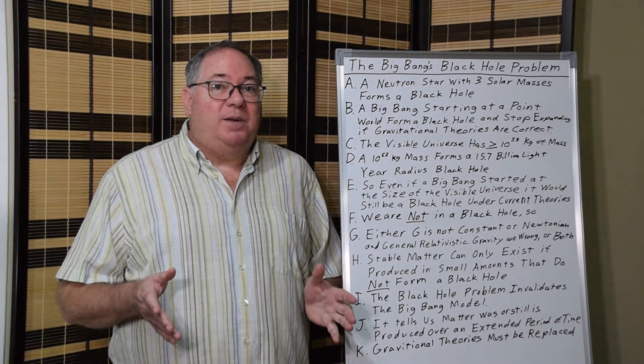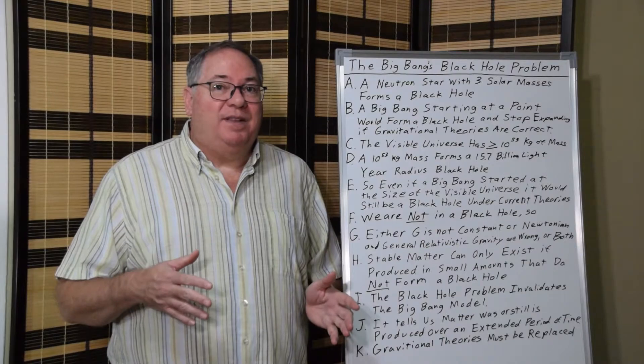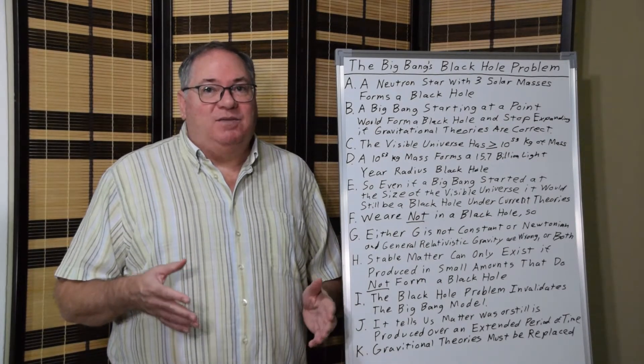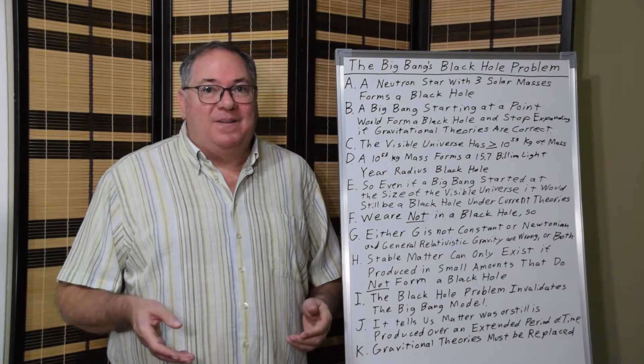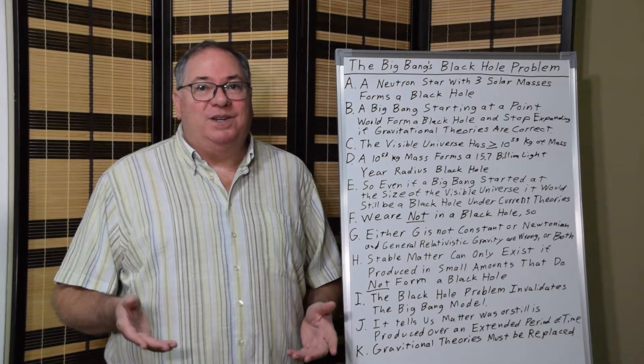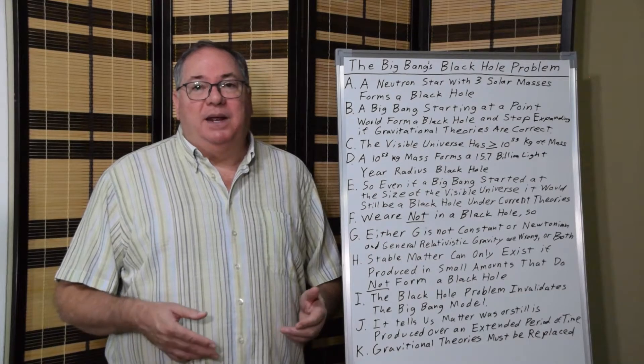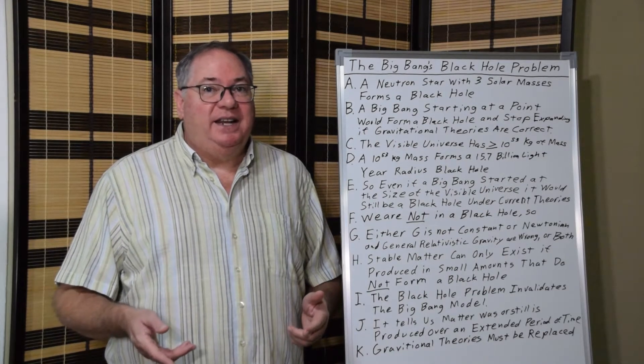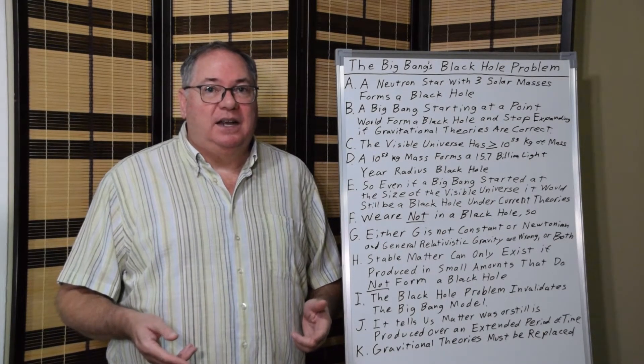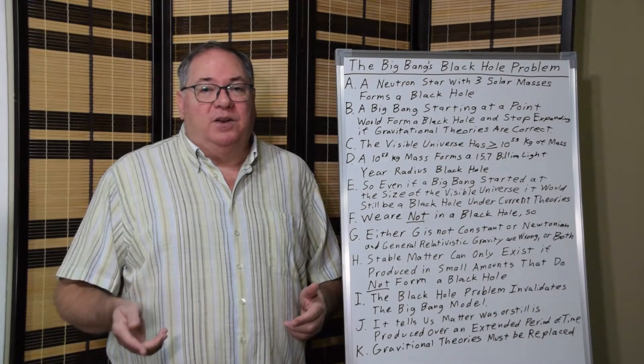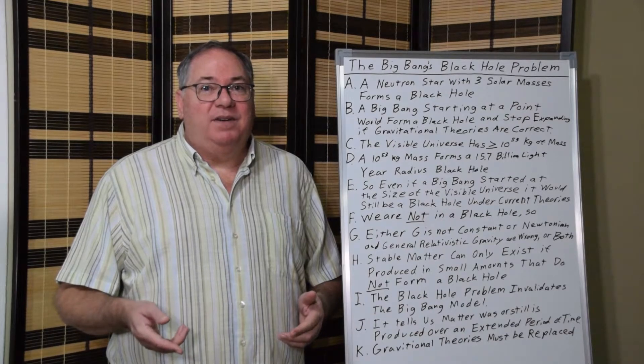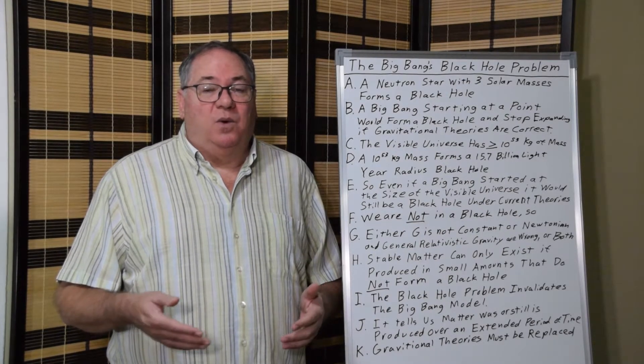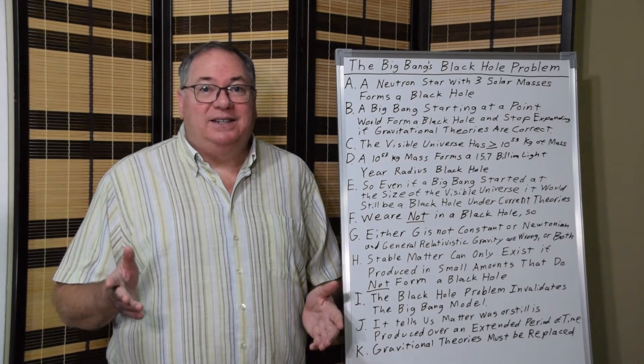But the problem we have on top of that is since our visible universe would be a black hole, and it's obviously not a black hole, something's wrong with our physics of gravity. It means either the constant G isn't actually a constant, or Newtonian gravity or general relativity gravity are wrong, or all three are wrong.